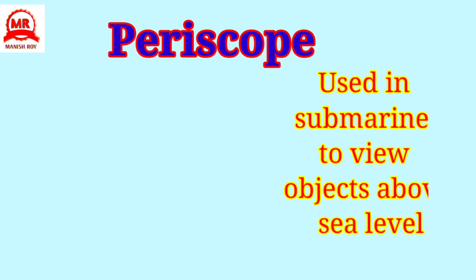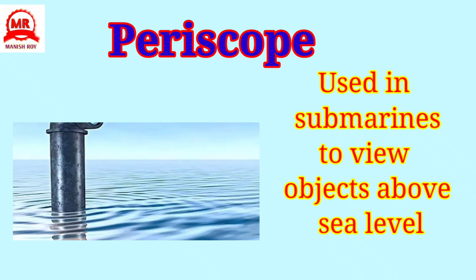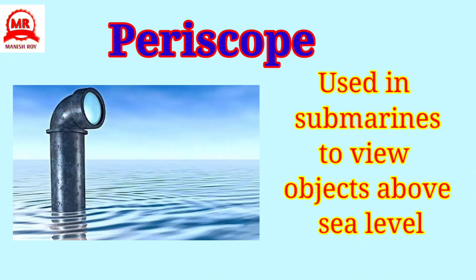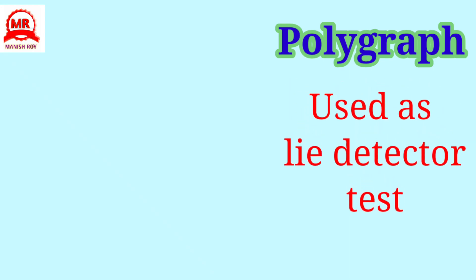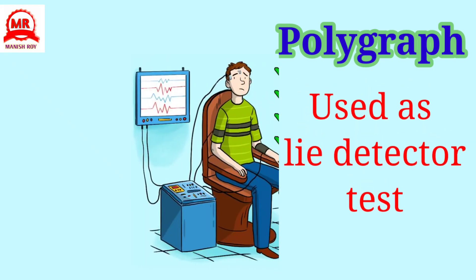Periscope: used in submarines to view objects above sea level. Polygraph: used as a lie detector test.